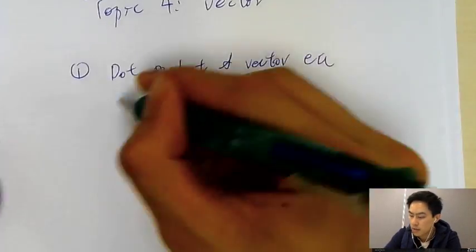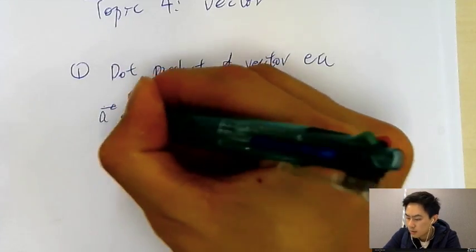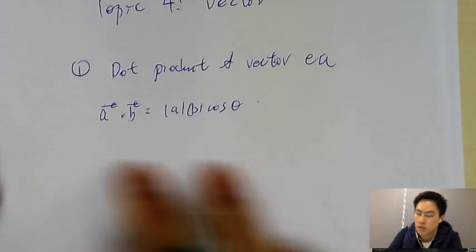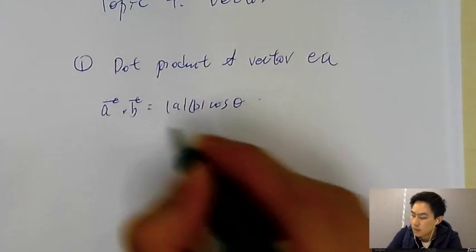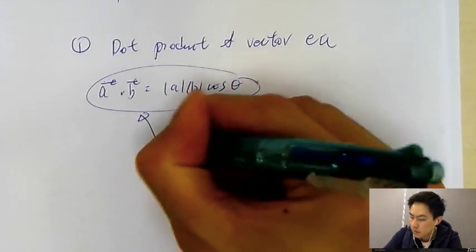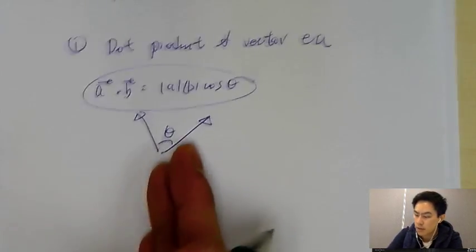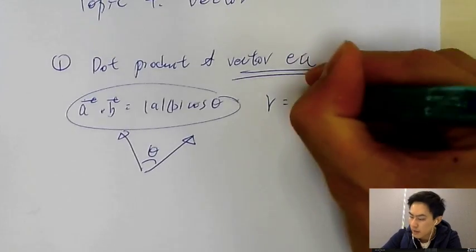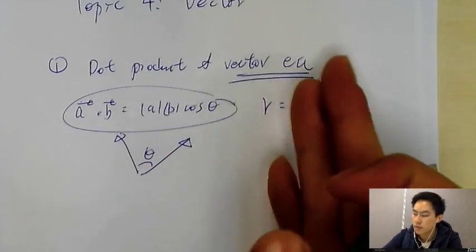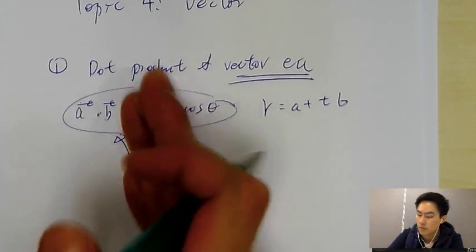Dot product is A dot B equals AB cosine theta. This equation is on your booklet and helps you find the angle between two vectors. For vector equation, it's always defined as R equals A plus TB. Usually this one is 2 marks and this one is 6 to 7 marks.